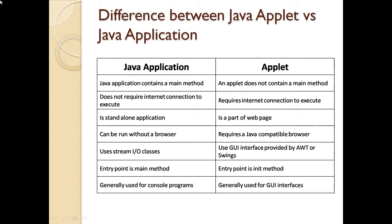Now, a Java application can be run without a browser. As we said, it is a standalone. Applet requires Java compatible browser. Java application uses stream IO classes. Applets need GUI interfaces which are provided by AWT and Swings.